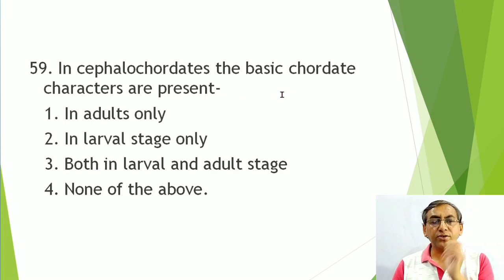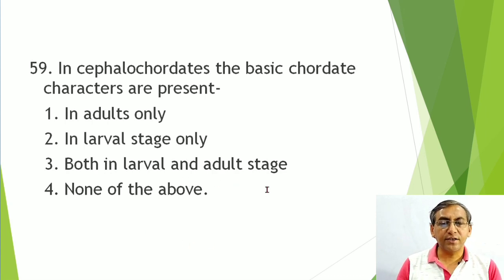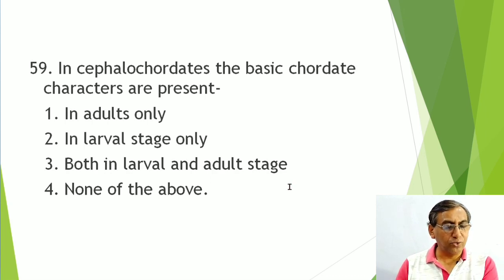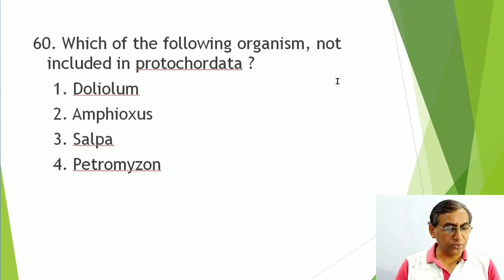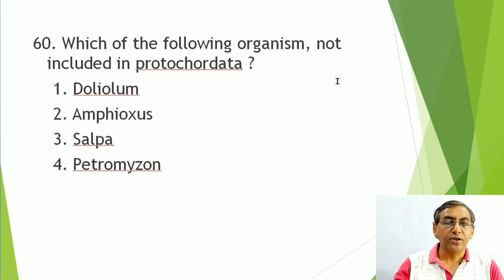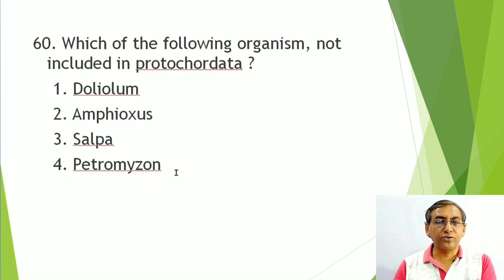In Cephalochordata, the basic chordate characters are present and persistent throughout life — both in larval and adult stages. Question: which organism is NOT included in Protochordata? Doliolum — Urochordata, included. Amphioxus — Cephalochordata, included. Salpa — Urochordata, included. Petromyzon — Vertebrata (Cyclostomata), so NOT included in Protochordata. Answer: Petromyzon (option 4).